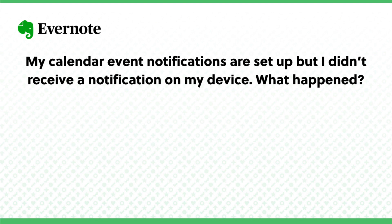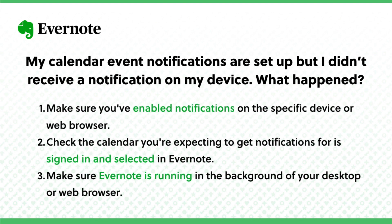My calendar event notifications are set up, but I didn't receive a notification on my device — what happened? First, you should make sure you've enabled notifications on the specific device or web browser you're expecting to receive notifications from. Also, be sure to check that the calendar you're expecting to get notifications for is signed in and selected in your calendar widget in Evernote. On desktop and web, make sure Evernote is running in the background of your device.